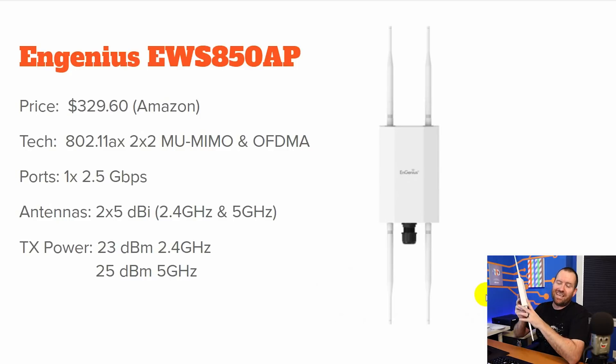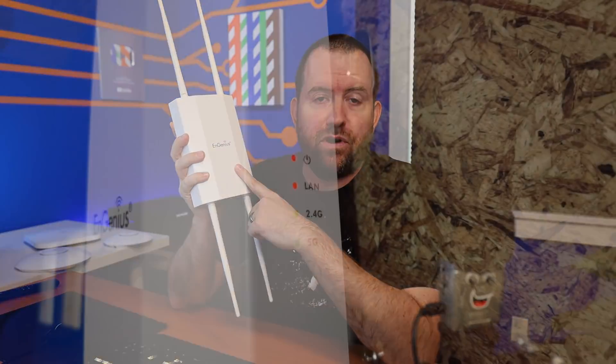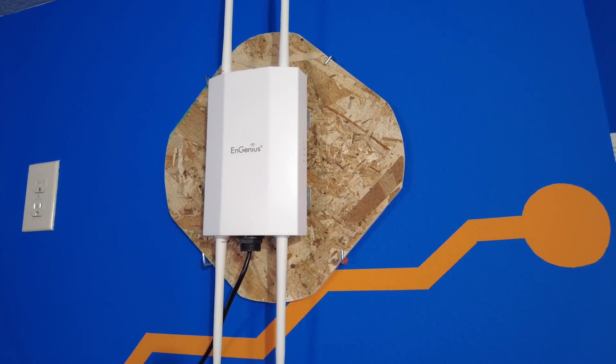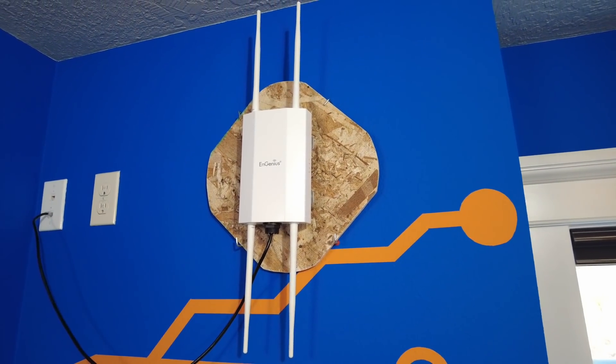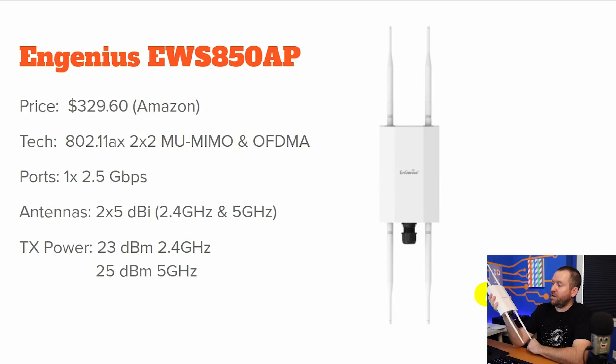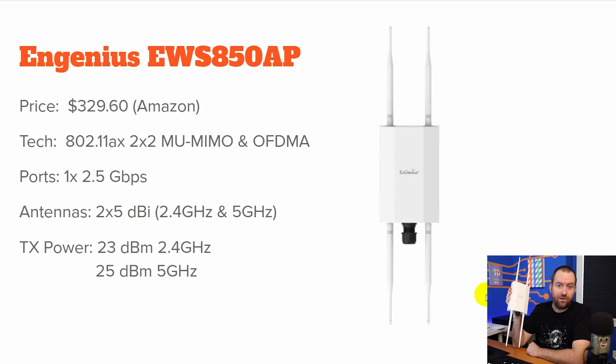Next we have the Ingenious EWS850AP. This is an IP67-rated outdoor access point. The price is $329.60. I recently did a review of this access point on the channel — make sure you go check that out. This is an 802.11ax Wi-Fi 6 2x2 multi-user MIMO access point, and it also has OFDMA. It features one 2.5 gigabit Ethernet port on the bottom of the device. For antennas, it has two 5 dBi antennas in the 2.4 GHz and two 5 dBi antennas in the 5 GHz range. Transmit power is 23 dBm for 2.4 GHz and 25 dBm for 5 GHz.